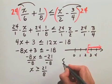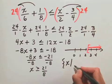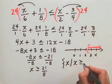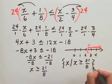Our set builder notation is just the set of all x such that x is greater than or equal to 21 eighths.